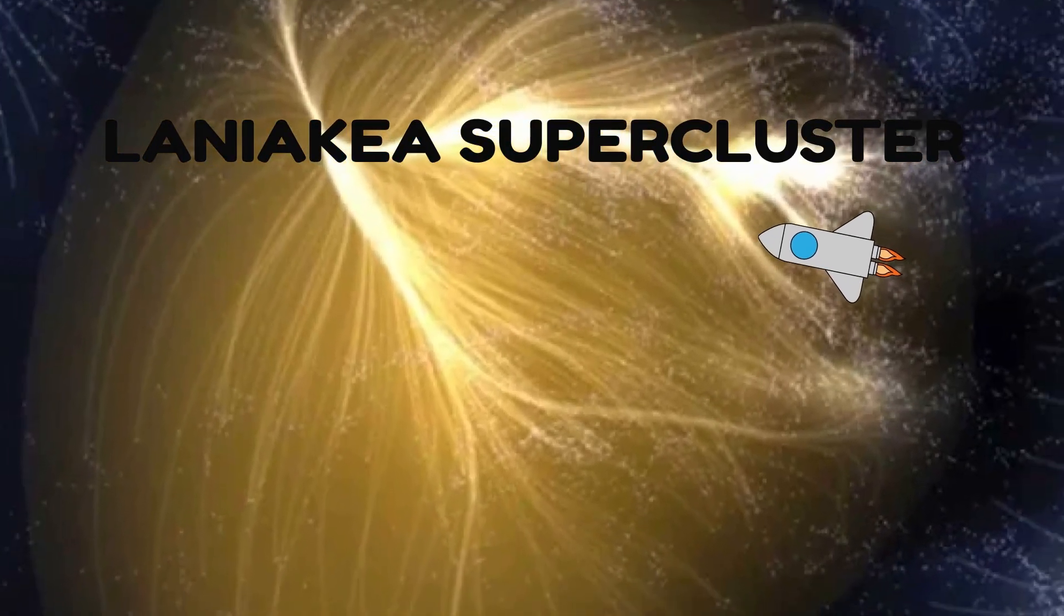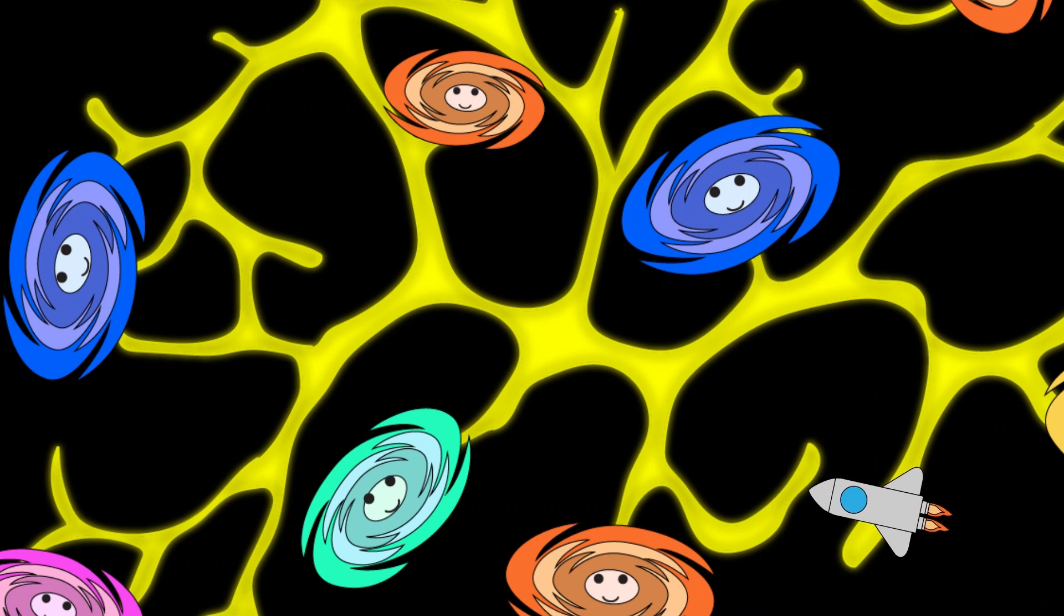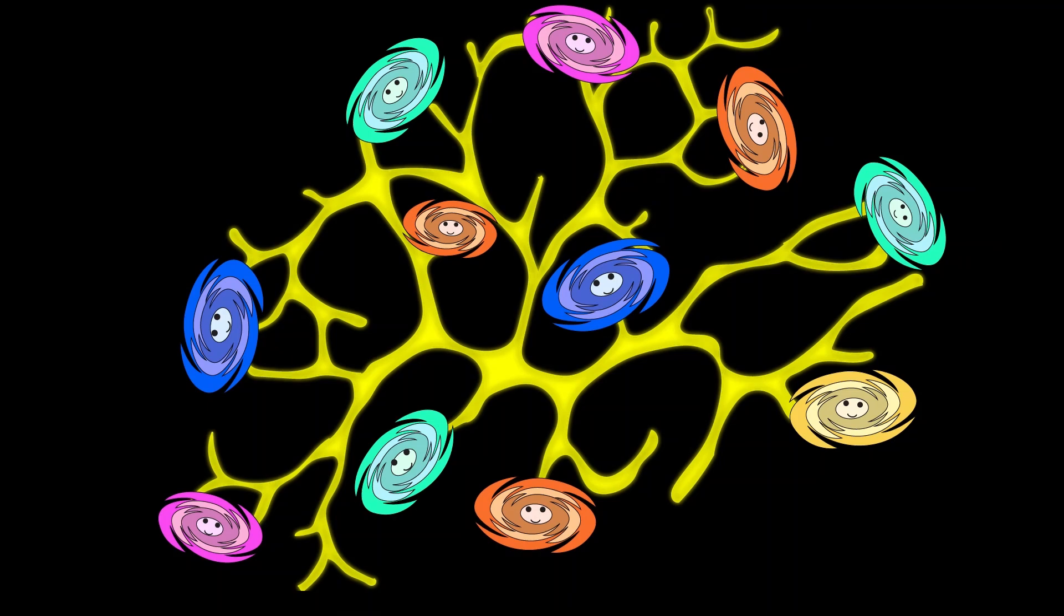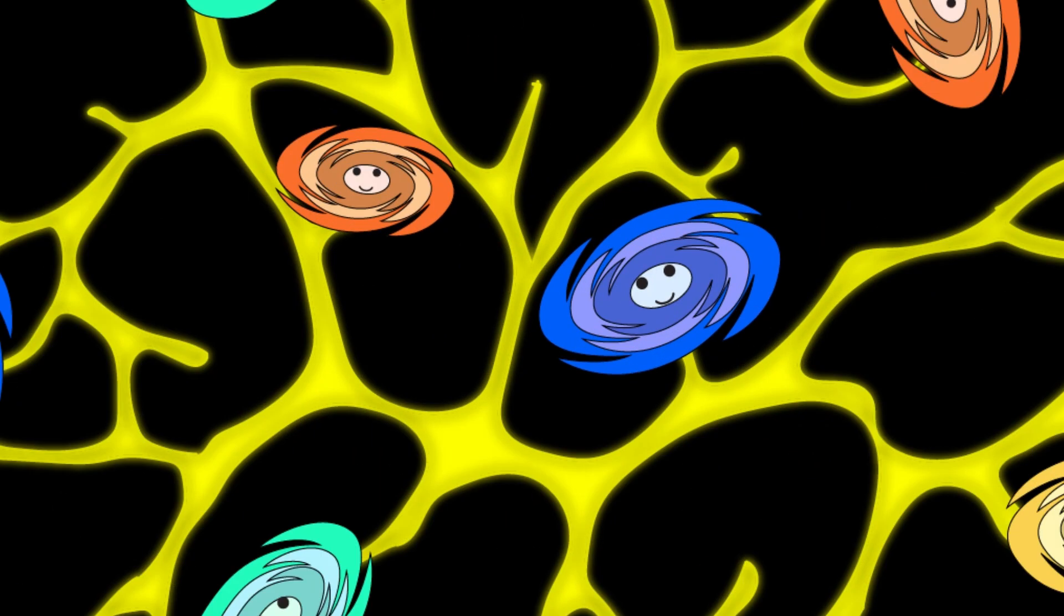You're inside Laniakia Supercluster, a gravitational metropolis containing hundreds of thousands of galaxies, all glued together by invisible forces. Zoom out further, and those filaments weave into a 3D spider web. The bright threads are galaxies. The dark gaps are voids.